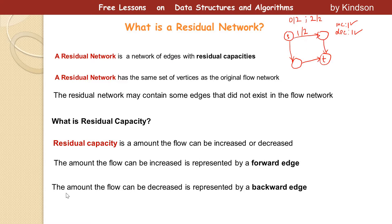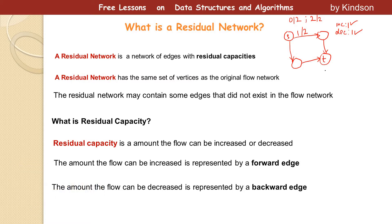As an illustration, if we create a residual network for a flow between s and a, we have a forward edge of 1 and a backward edge of 1. This shows what you can create from a flow network when you have an edge with a flow of 1 and a capacity of 2.